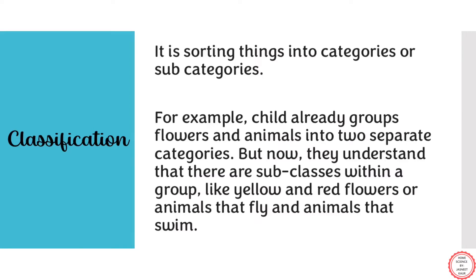Classification also includes the ability to divide objects into groups or subgroups. By now, the child already knows that flowers and animals belong to different groups. But now the child will also understand that there are subclasses within groups. For example, flowers can be of different colors like yellow, red, green, and purple. Similarly, animals can also be of different categories — those who can fly or those who can swim.